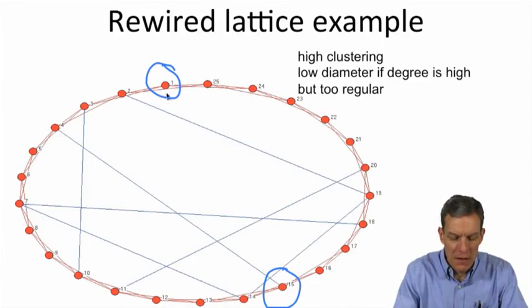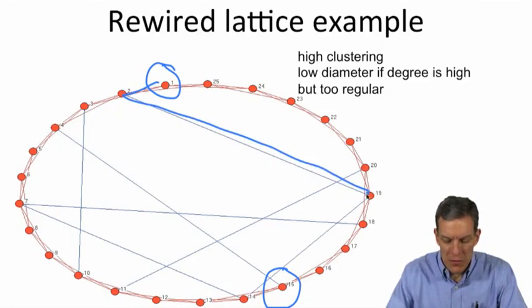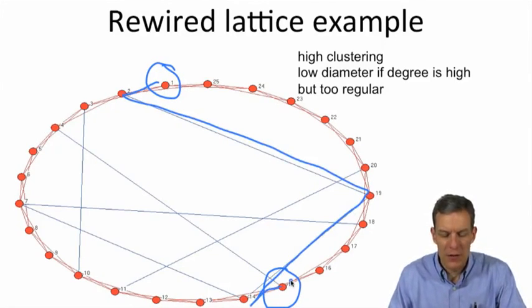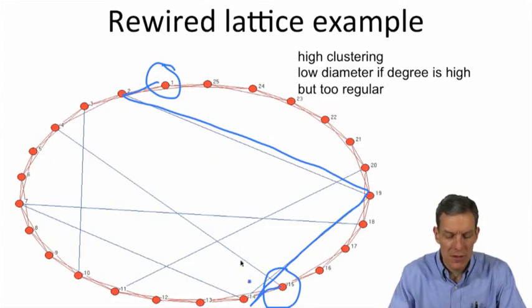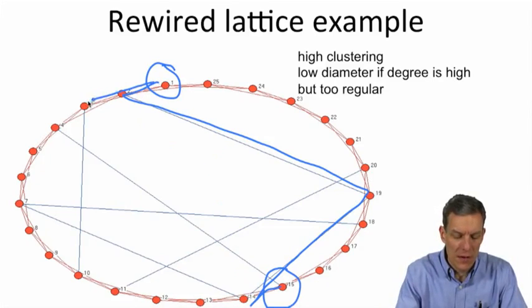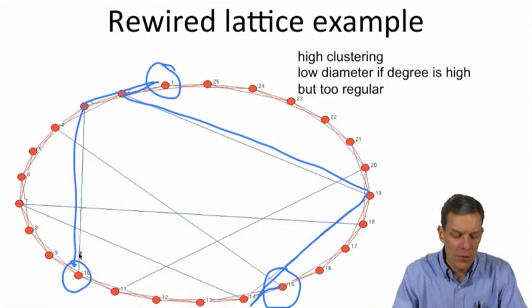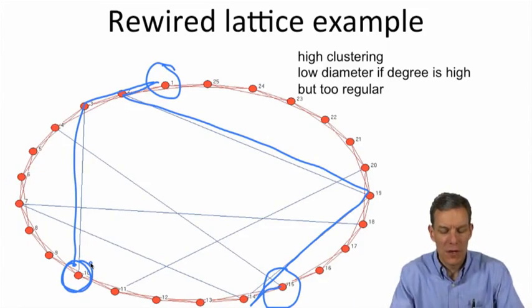By putting in these few connections, these extra ones, now to get from 1 to 15, you've got a fairly short path. You're connected at a distance 4. To get from 1 to 14, you're connected at a distance 3. A few of these extra things allow you to get, so one can get to 10 now in just two hops and so forth.